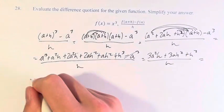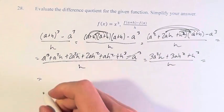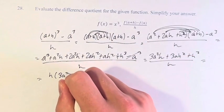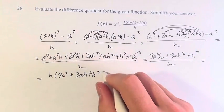This is over h. And finally, what we have to do is pull out an h from the top and then divide it with the bottom. So we have h times 3 a squared plus 3 a h plus h squared.